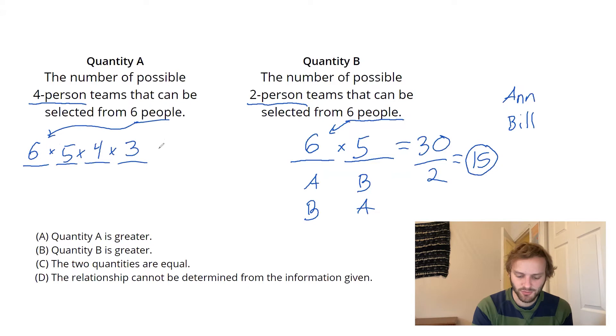If you went ahead and multiplied that out, you would get 360 lists. Wow, it looks way bigger than quantity B so far, but remember the double counting we had to account for over here. We need to do that over here as well in quantity A.